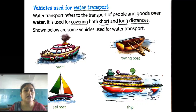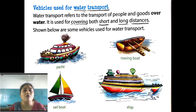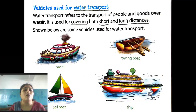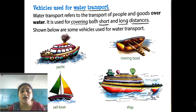Today we are starting with the vehicles used for water transport. Water transport refers to the transport of people and goods over water — that means, the movement of people and goods over water. For example, if you want to go to an island, there is no land, only water, so we use a boat.